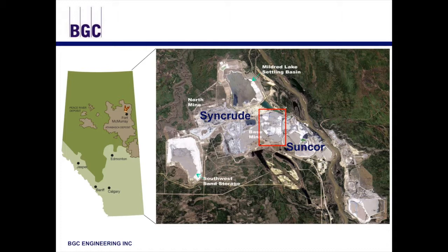This is a map of Syncrude and Suncor, an area I'm most familiar with. The mining process produces really large-scale disturbances. Just to give a sense of scale, this is Suncor's Pond 1 — it's about 230 hectares. The industry practices progressive reclamation to reclaim areas as soon as possible after mining, and because of that, different areas of a lease will be at various stages of this cycle.